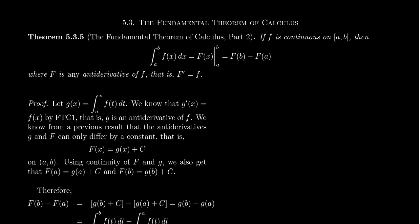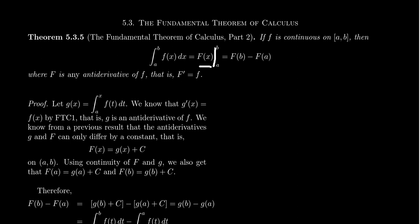If f is a continuous function — continuity is necessary for a couple of reasons, and in particular the Fundamental Theorem of Calculus Part 1 uses continuity — if f is continuous on a domain a to b, then the definite integral from a to b of f(x) dx can be computed as capital F(x) evaluated from a to b. That vertical line notation is just shorthand for taking F(b) minus F(a).